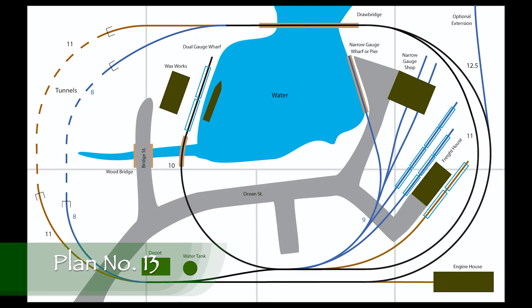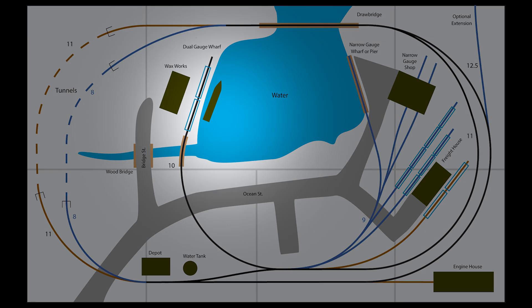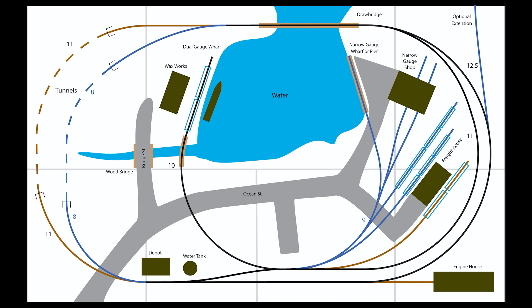You might guess from the additional detail on this plan that this is the one I ultimately settled on and you'd be right. The NN3 narrow gauge is definitely the star in this plan with the standard gauge playing an important secondary role. This plan flips the dual gauge wharf spur switching lead back around again. After drawing in some streets I realized that this track wouldn't detract from the town on the left trains on the right concept too much.